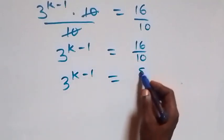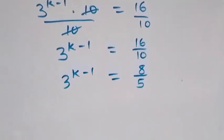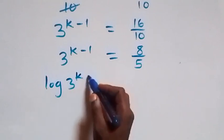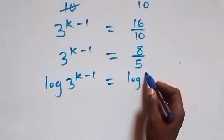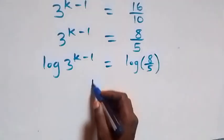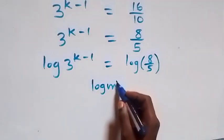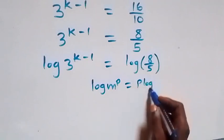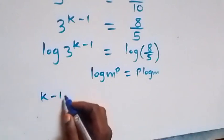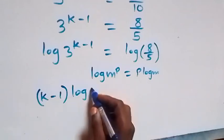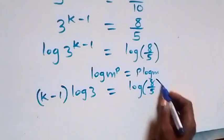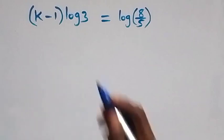Now let's take the log on both sides. We have log 3 raised to power k minus 1 equals to log 8 over 5. Applying the power law of logarithm, log m raised to power p equals p log m, so k minus 1 becomes the power and this becomes k minus 1 multiplied by log 3 equals to log 8 over 5.